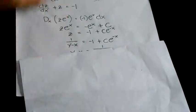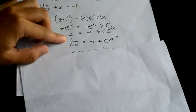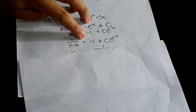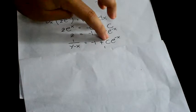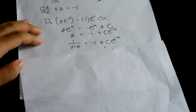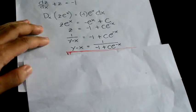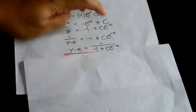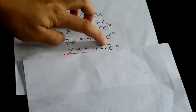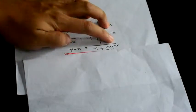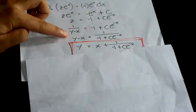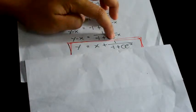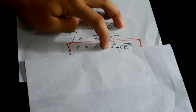Now since z is equal to 1 over y minus x, we will substitute: 1 over y minus x is equal to negative 1 plus c times e to the negative x. Manipulating, you will get y minus x is equal to 1 over negative 1 plus c times e to the negative x.